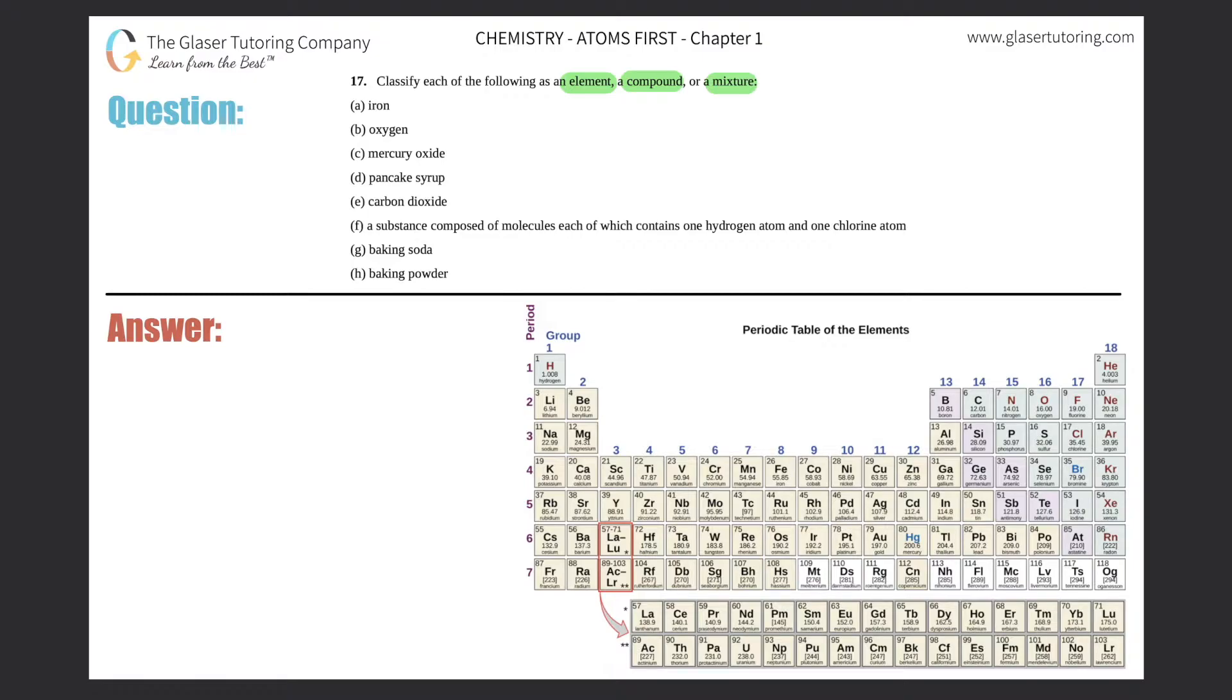I'm just going to simplify it. Just know that elements are the smallest, then comes compounds, then comes mixtures, and it's a piggyback effect. An element is a single square or box on the periodic table. If I looked at iron, which is Fe, a single Fe would be an element.